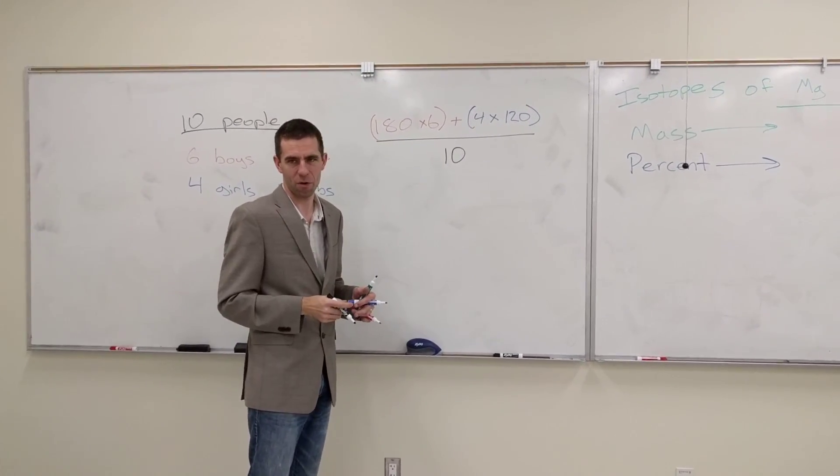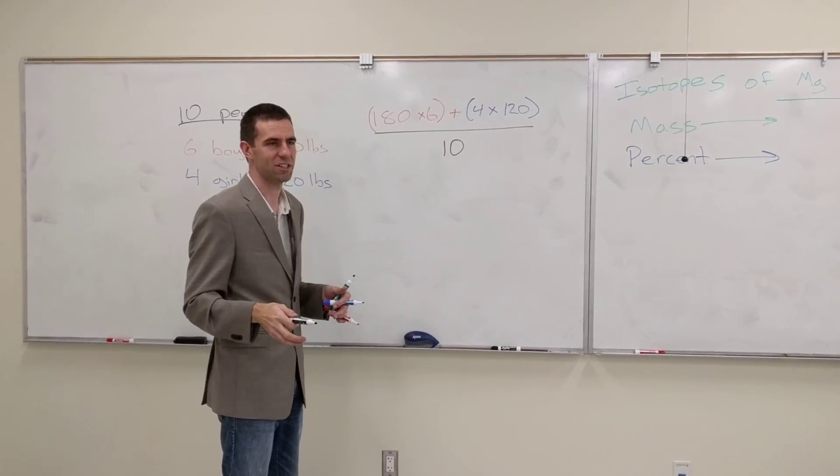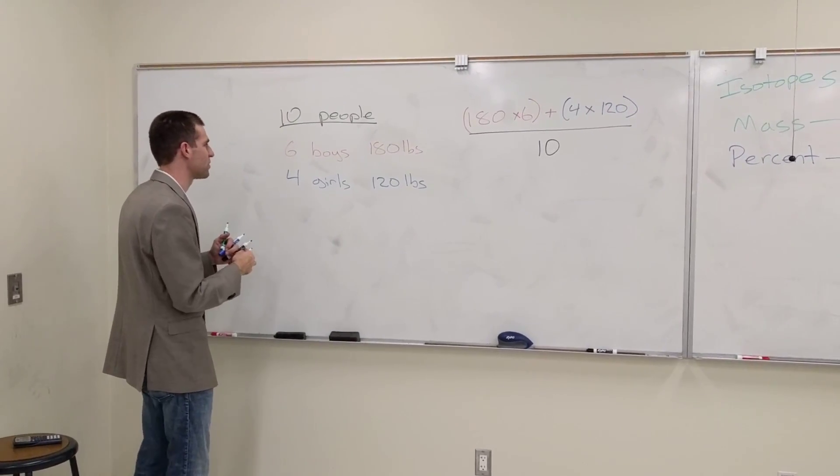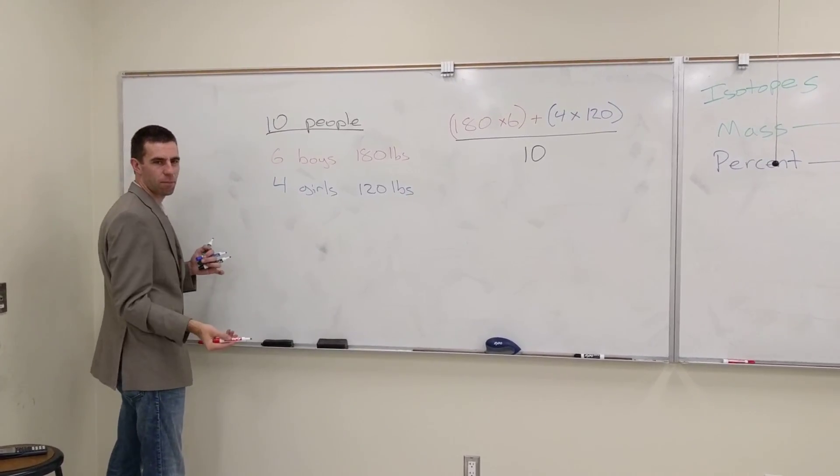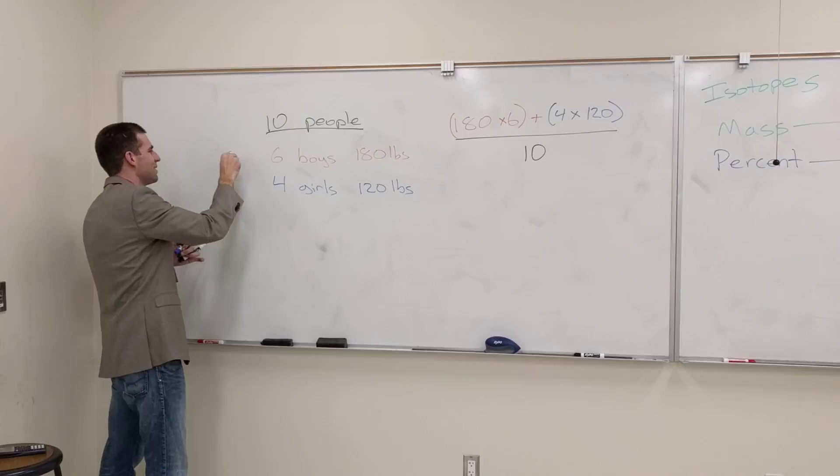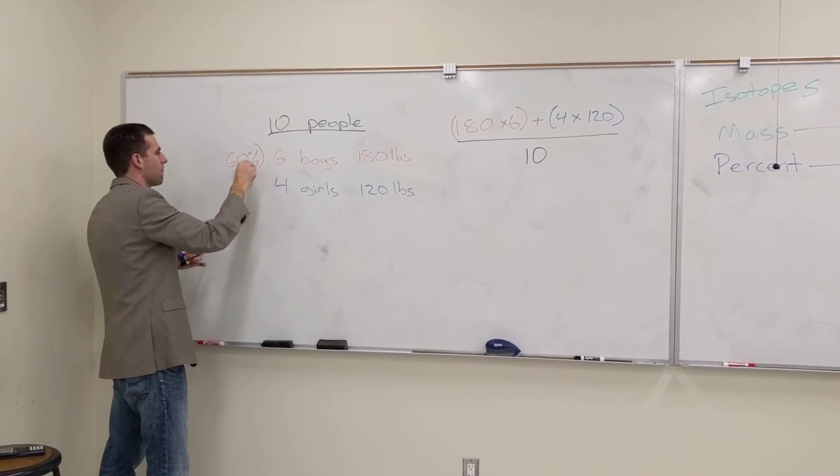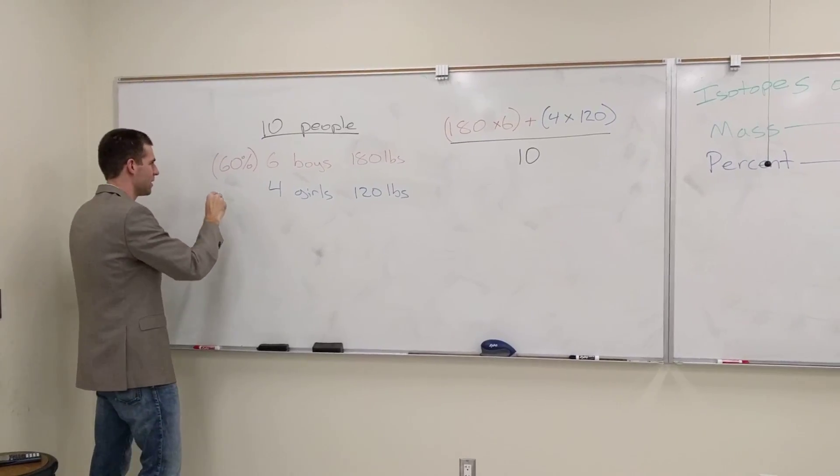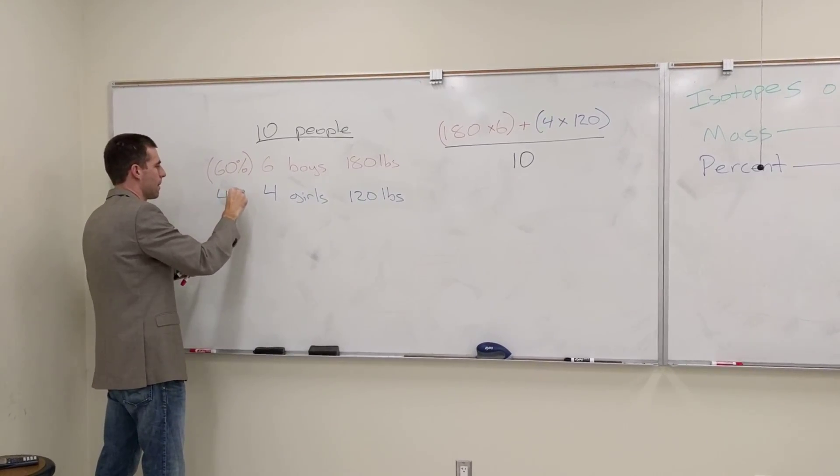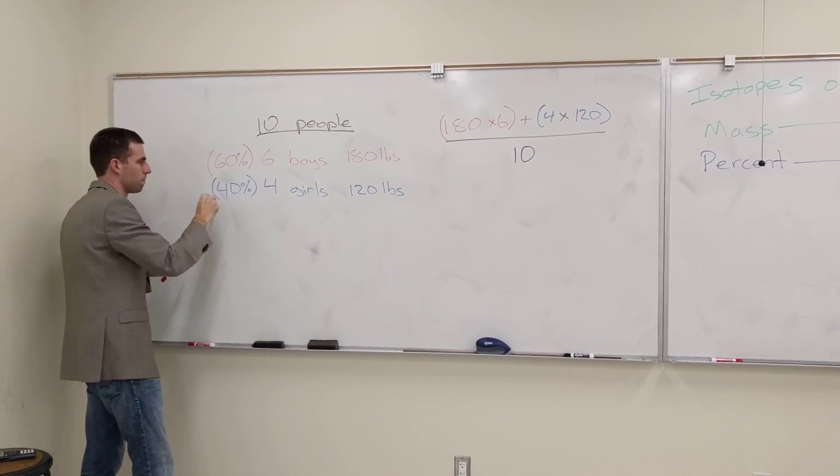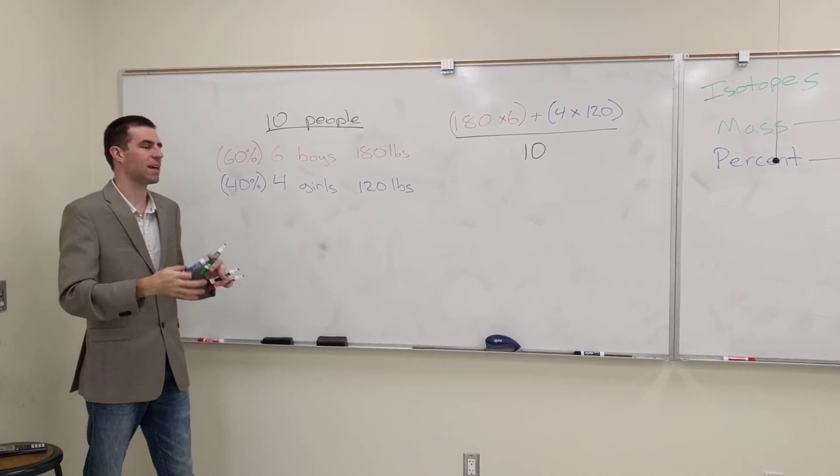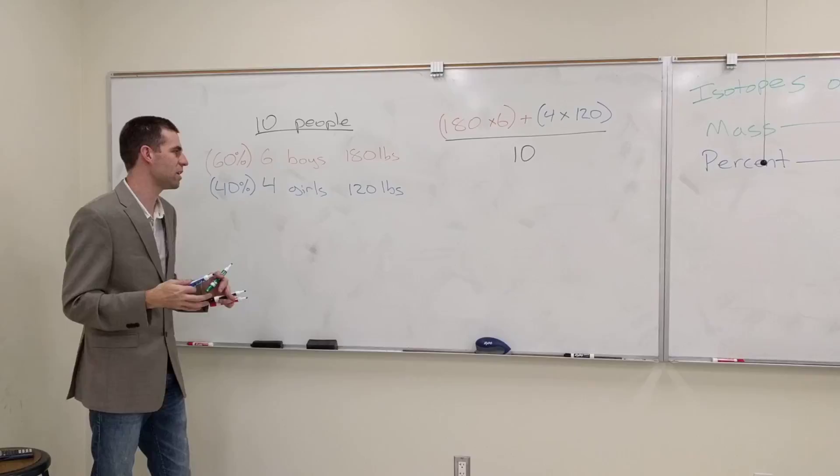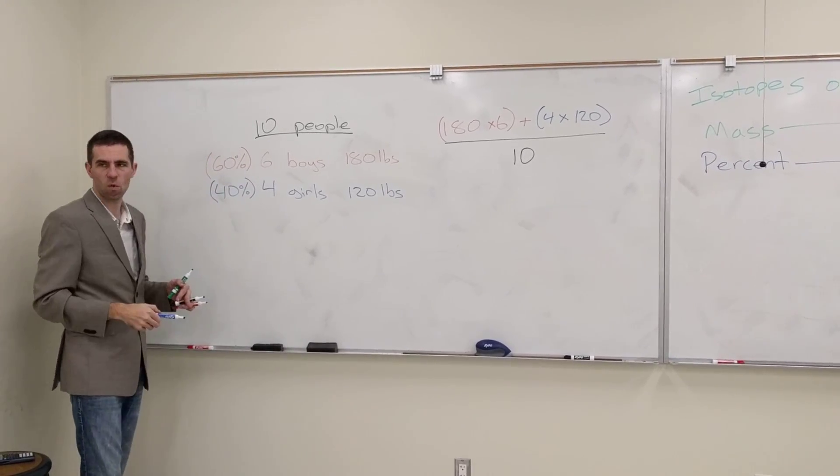But let's try another way using percentages because that's what we're going to need to use. So what is the percent of boys that we have? 60% boys. What percent girls do we have? 40% girls. So I want to calculate something called a weighted average. We're going to use these numbers to find a weighted average.